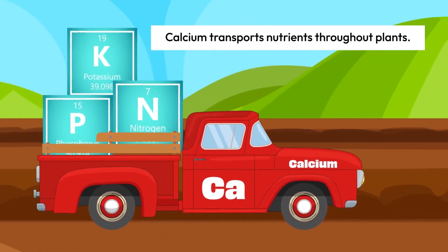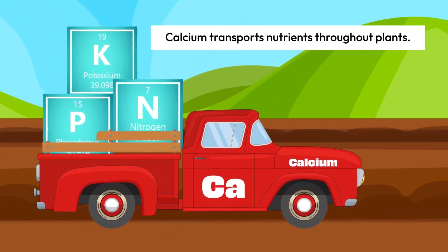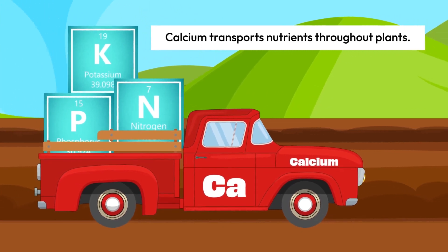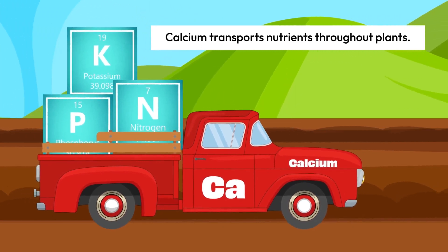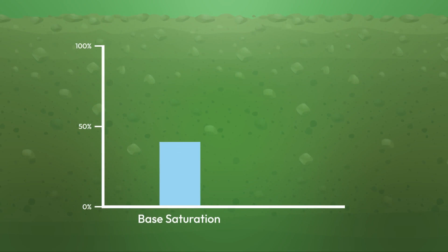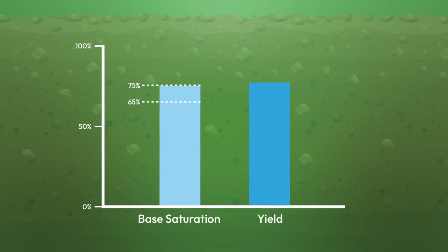Dr. Albrecht went as far as to say that all nutrients are delivered to the plant on the back of calcium. Desired base saturation levels of calcium in the soil range between 65 and 75 percent for optimal crop performance. When calcium base saturation dips under these levels, the impacts on plant production and yield are severe.